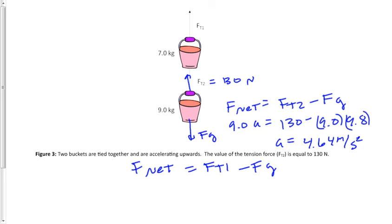So again, same equation, except now I need to put in 16 multiplied by acceleration of 4.64 equals force tension 1 minus force gravity. And again, it's going to be 16 times 9.8.